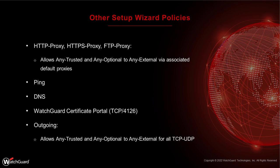When you go through the setup wizard Quick Start on a Firebox, it creates a few default policies to get basic services running. It creates an HTTP proxy, HTTPS proxy, and FTP proxy allowing any internal host from Trusted or Optional to access the web. FTP is debatable at this point — it's been in there for 26 years. It also allows ping and outbound DNS requests, since you can't resolve domain names without DNS.